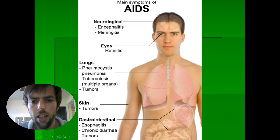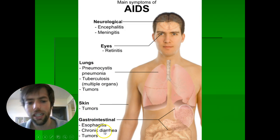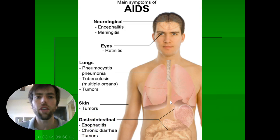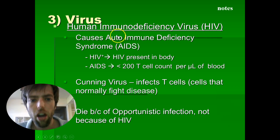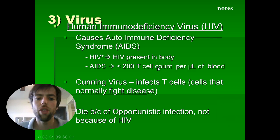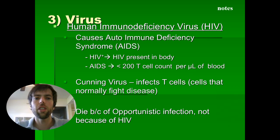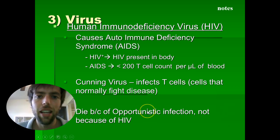When you have HIV and progress to AIDS, you can get infections in your eye, pneumonia, tuberculosis, skin and lung tumors, chronic diarrhea, and more — all because the immune system's 'cops' are gone and other infections come in. The difference between HIV and AIDS: HIV is the name of the virus that causes autoimmune deficiency syndrome, or AIDS. Once your T cell count drops below 200, you are said to have AIDS, and it's usually opportunistic infections that come along and kill you, not the HIV virus itself.